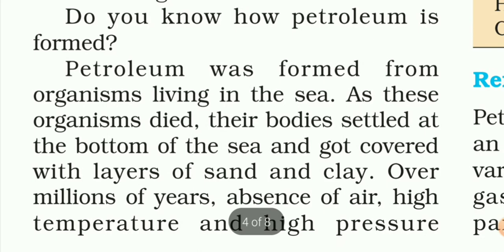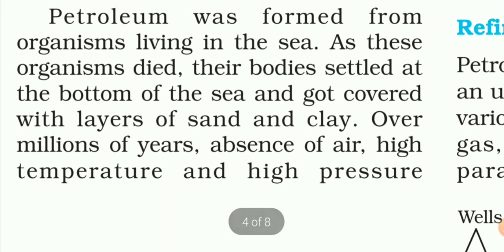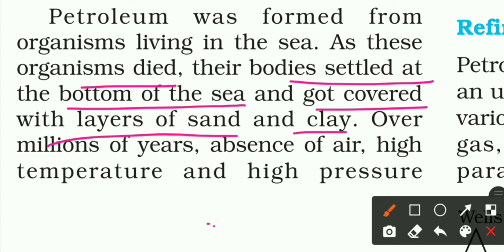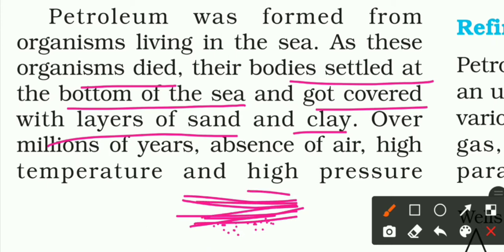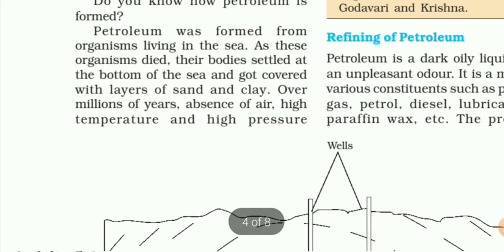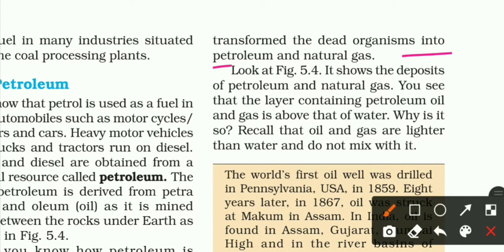Do you know how petroleum is formed? Petroleum was formed from organisms living in the sea. Jab woh mar gaye, their bodies settled at the bottom of the sea and got covered with layers of sand and clay. Over millions of years, bahut saal ho ke baad, woha par jab oxygen ki absence ho gayi, high temperature aur high pressure ho gaya, toh ye dead organisms petroleum aur natural gas mein convert ho gaye.